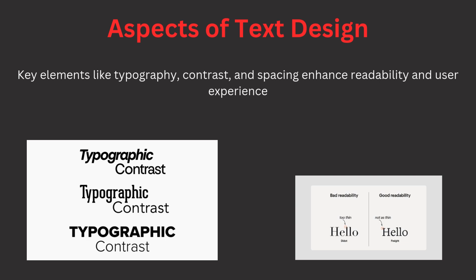Now, aspects of text design. Designing text for multimedia is not just about choosing a font — it involves considering the user experience, readability, and the context in which the text will appear. Typography, line spacing, color contrast, and alignment are some critical aspects. For example, using high contrast between text and background, like black text on a white background, improves readability. Choosing the right design ensures the message is communicated clearly, keeping the user engaged without distraction or confusion.